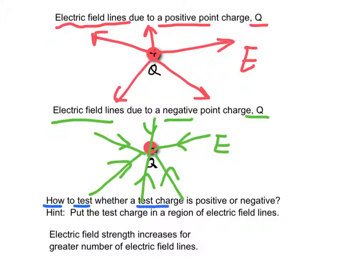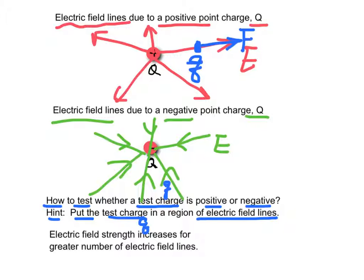How to test whether a test charge Q is positive or negative? You can put the test charge Q in a region of electric field lines. For example, if the test charge Q is placed at a point and the force acting on Q is in the same direction as the electric field line, we conclude that the charge Q is positive. However, if the force acting on the charge Q is in the opposite direction to the electric field line, then we conclude that the charge Q is negative.